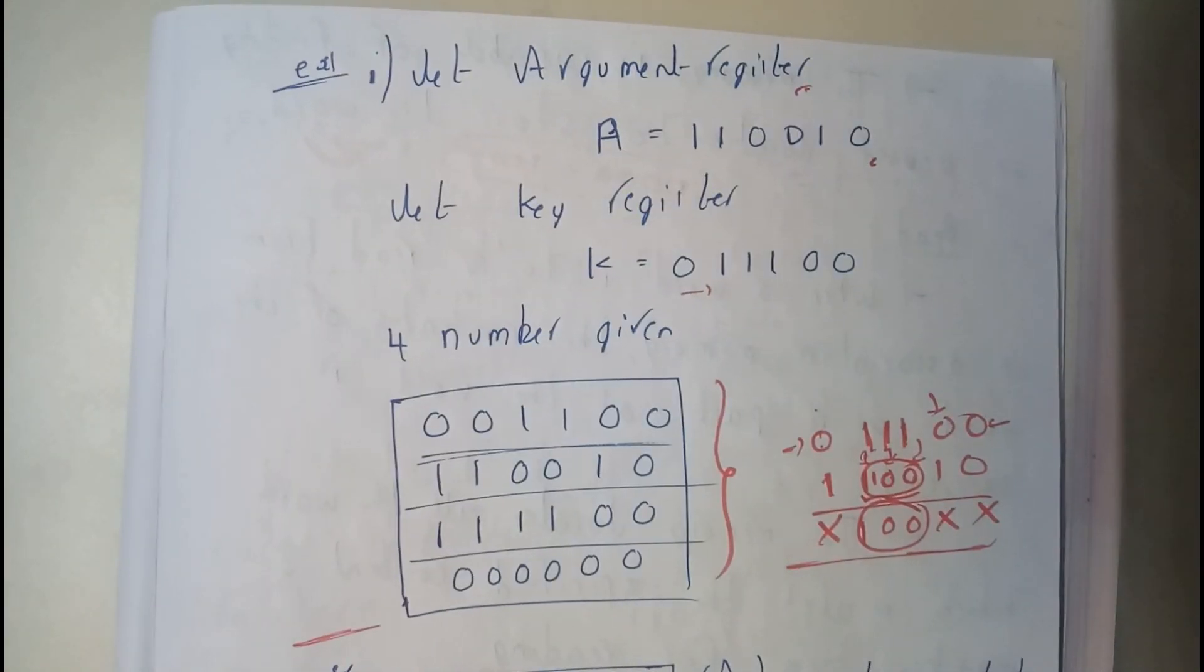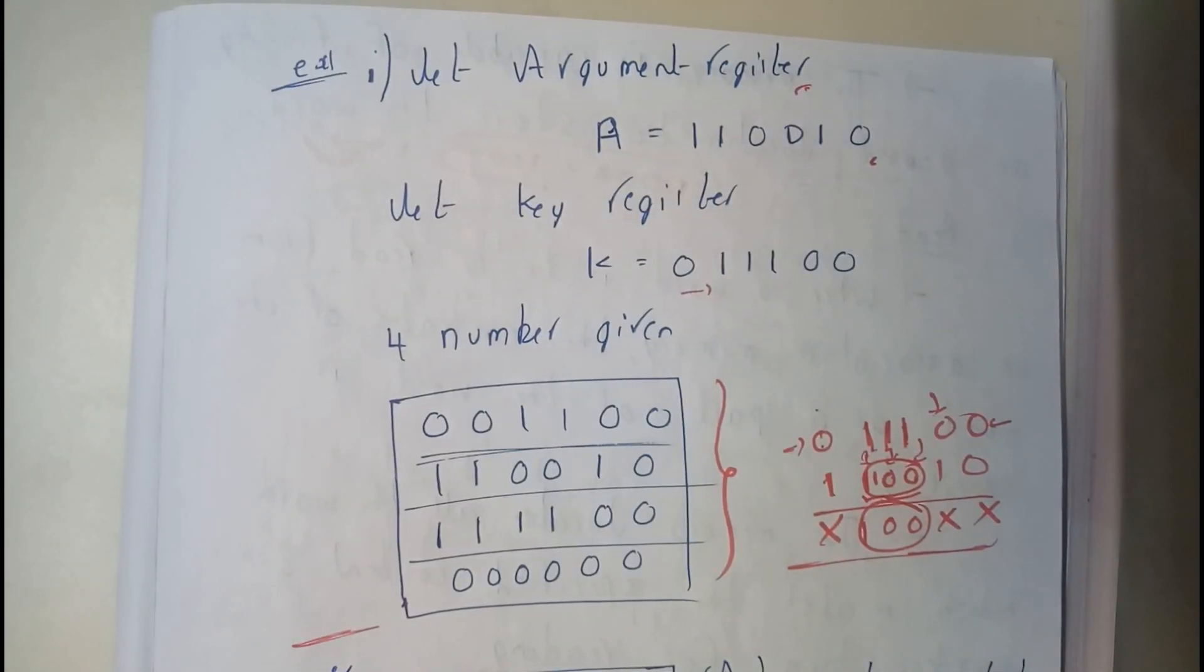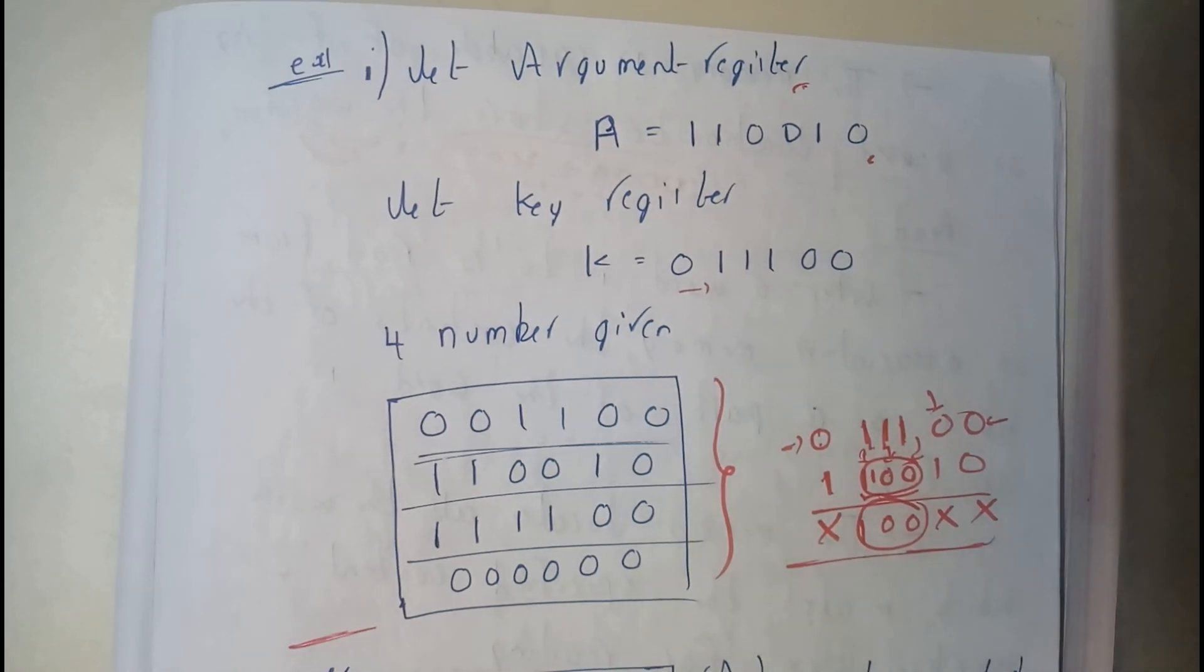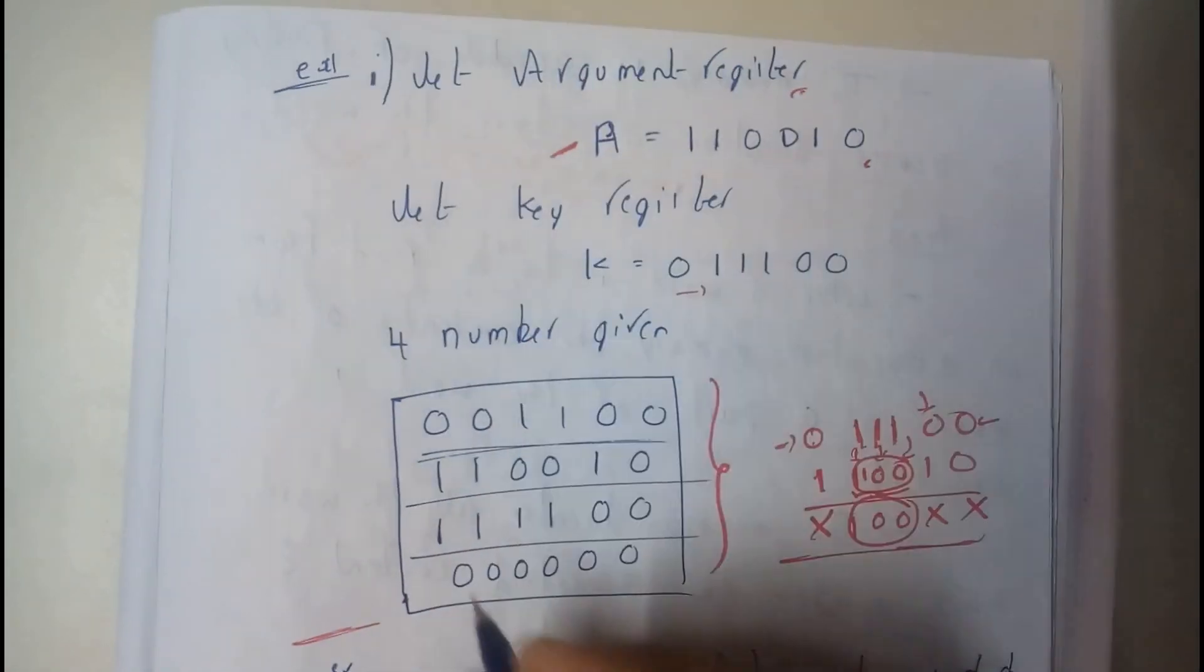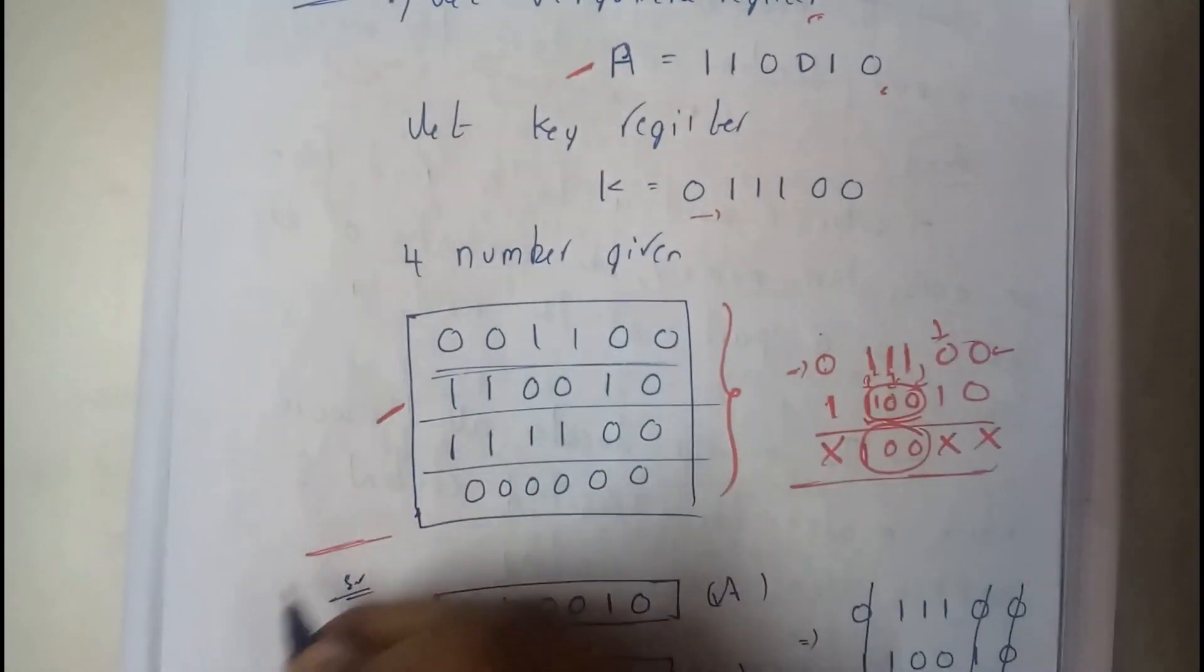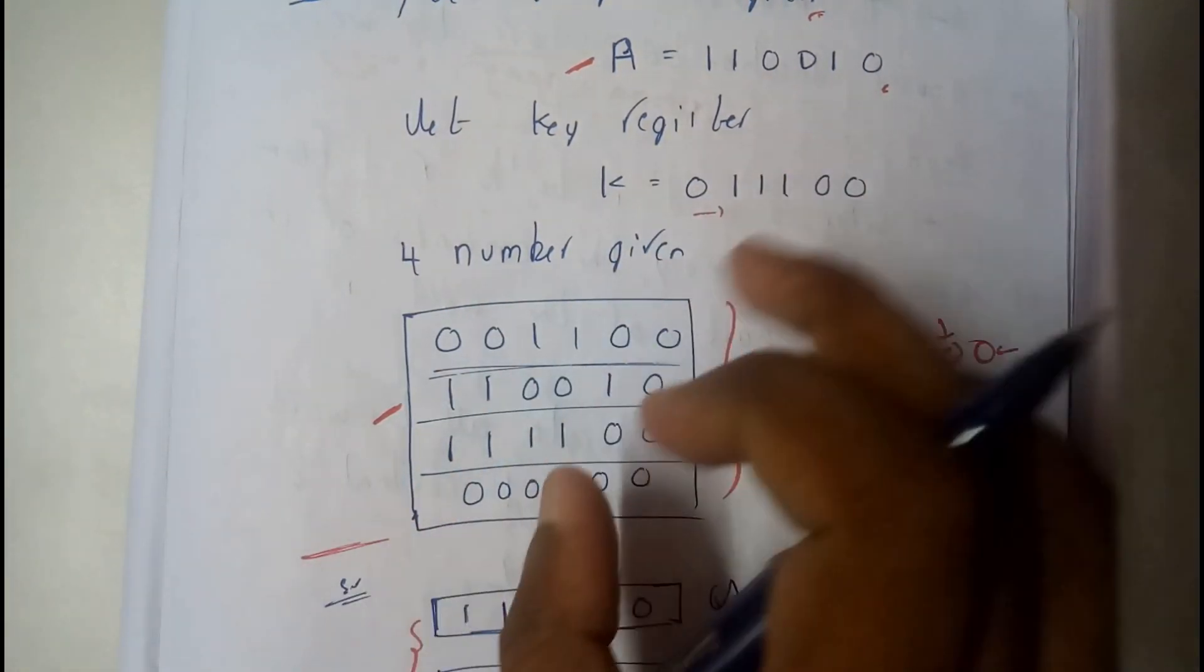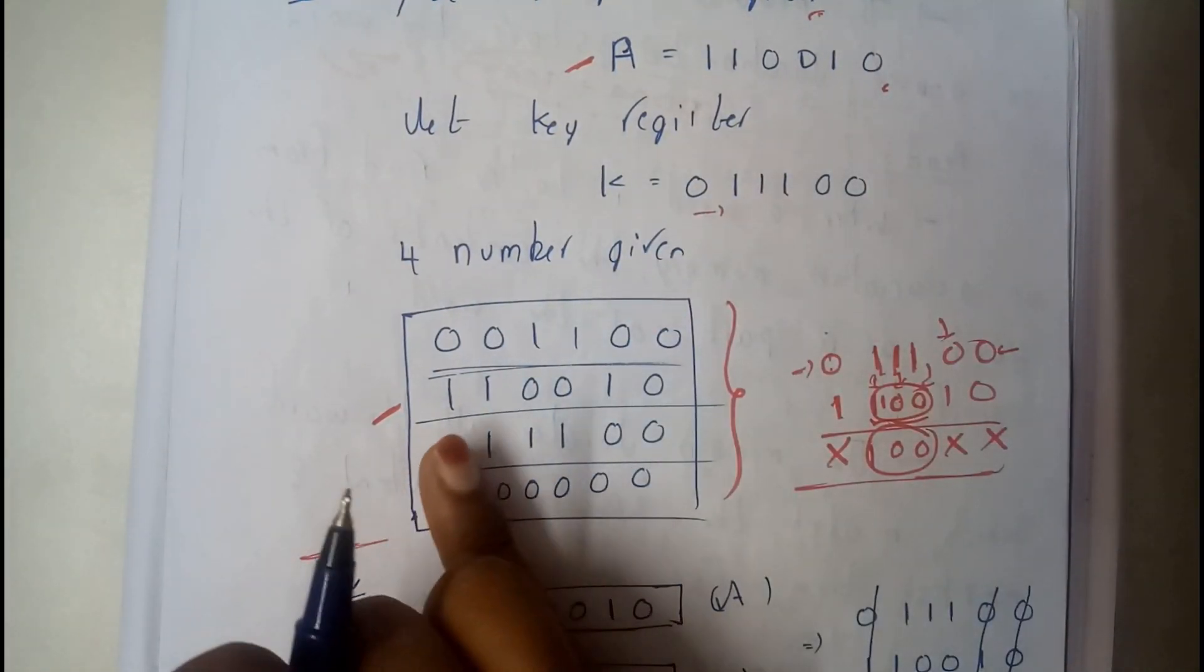So initially the first step will be... Okay, let us go through it. The first step will be... Okay, just by observing you can say that this A is exactly matching with this number, right? So that is what we need to find. That's our main goal, to find this is the match.